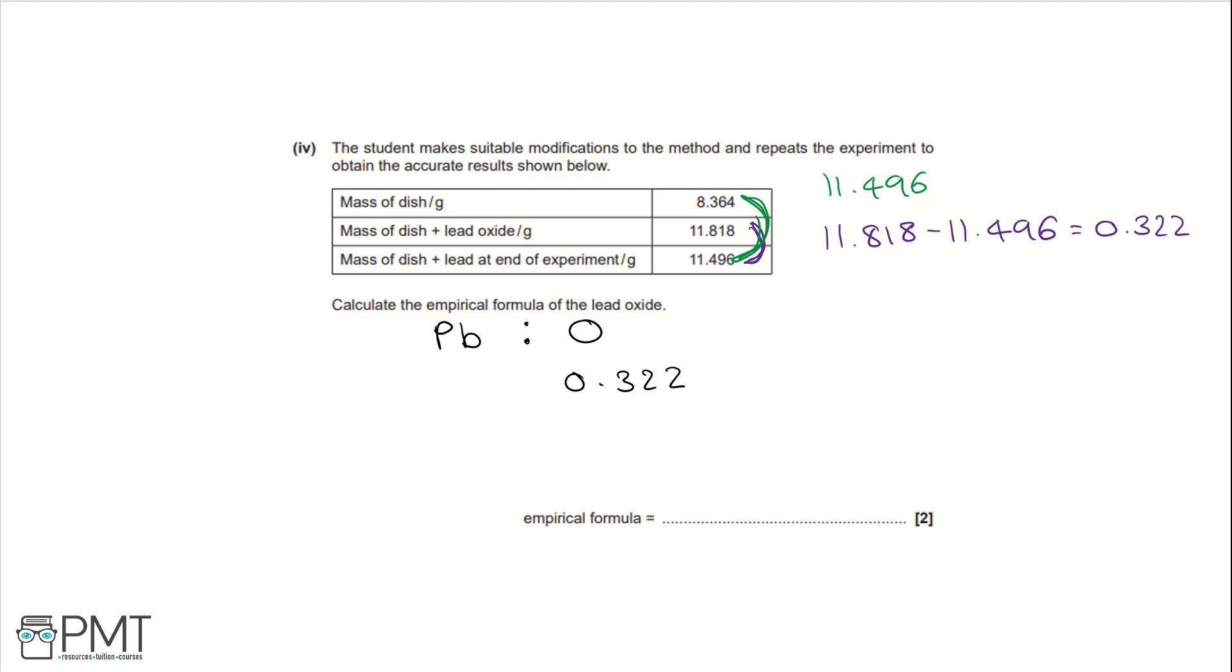So that's 11.496 minus 8.364. That equals 3.132. So then we can work out the molar ratios by dividing by the relative formula mass. So that would be 3.132 divided by 207.2, and it's in a ratio of 0.322 divided by 16. So that turns into 0.0151 to 0.020125. So that is a 3 to 4 molar ratio.